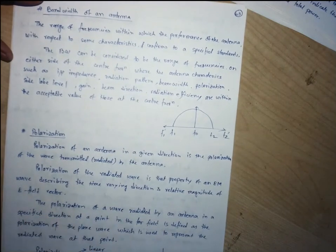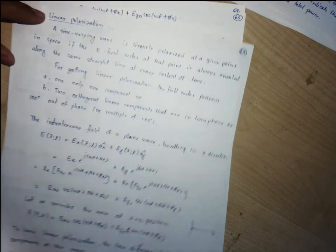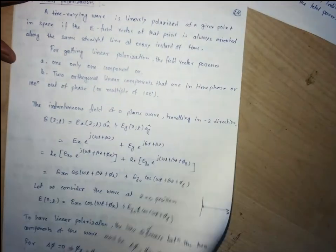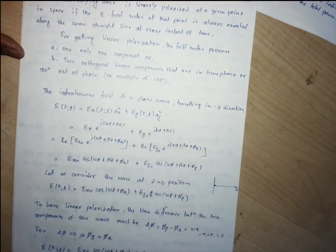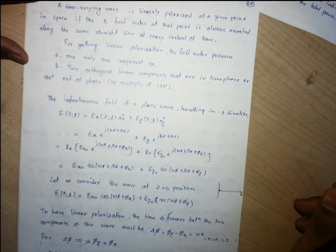There are three kinds of polarization: linear, circular, and elliptical. We've seen the necessary and sufficient conditions for achieving each. For linear polarization, we can have either one orthogonal component or two of them. If two orthogonal linear components exist, there should be a phase difference of 180 degrees or a multiple of that.